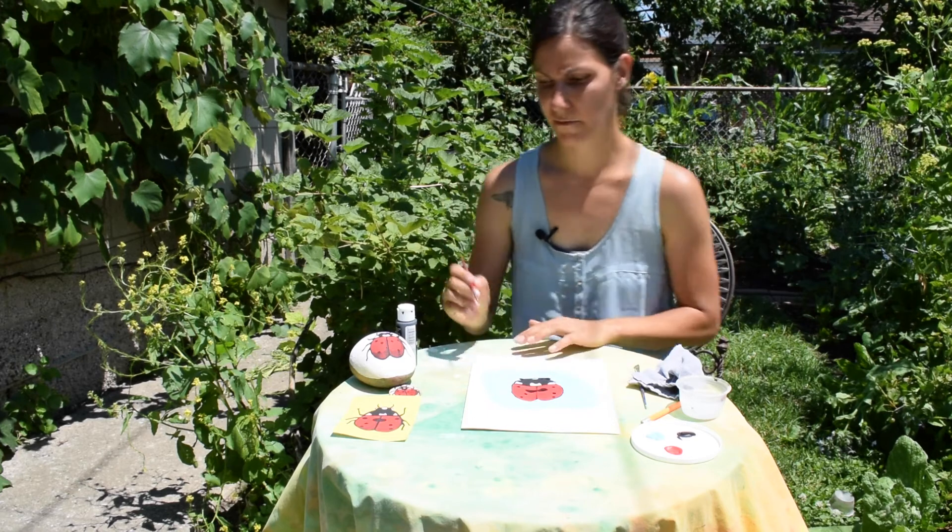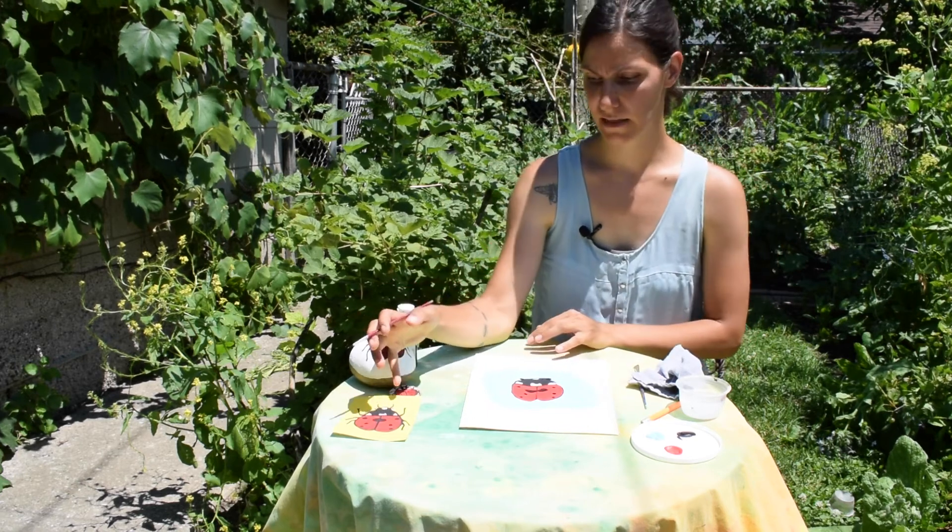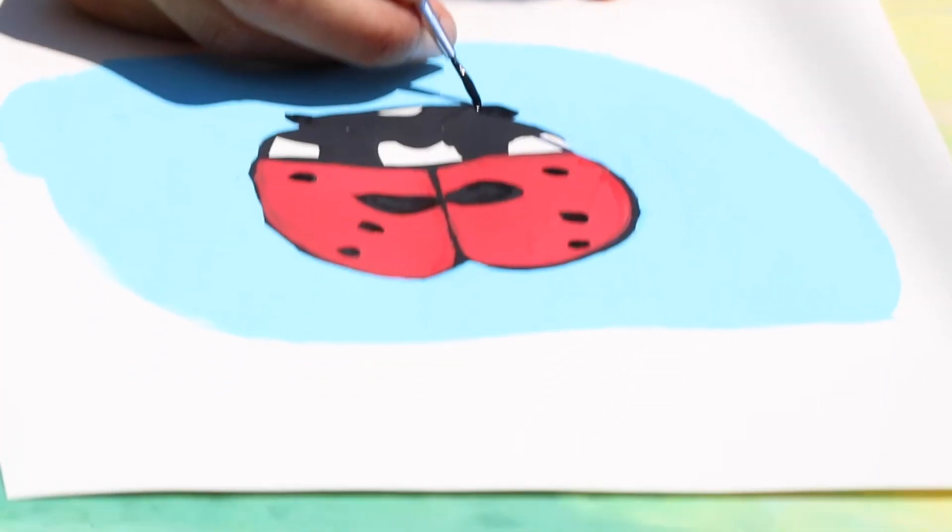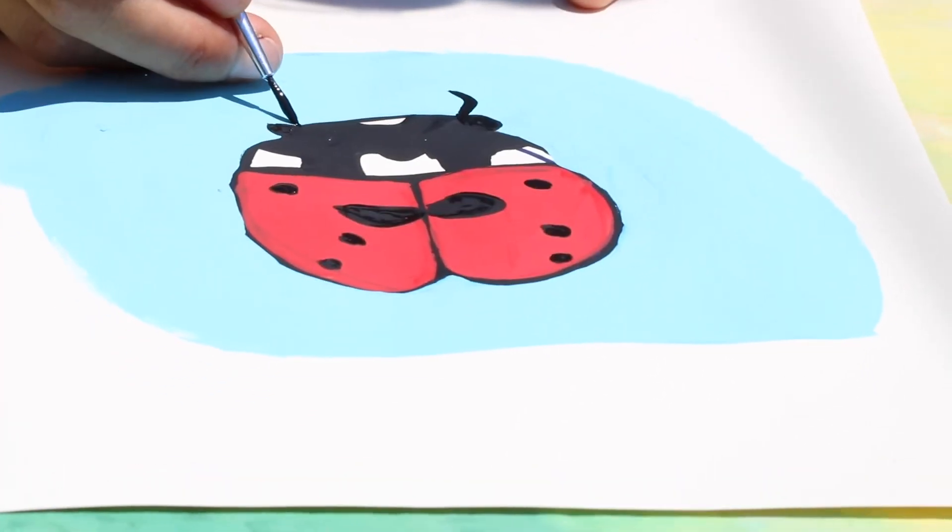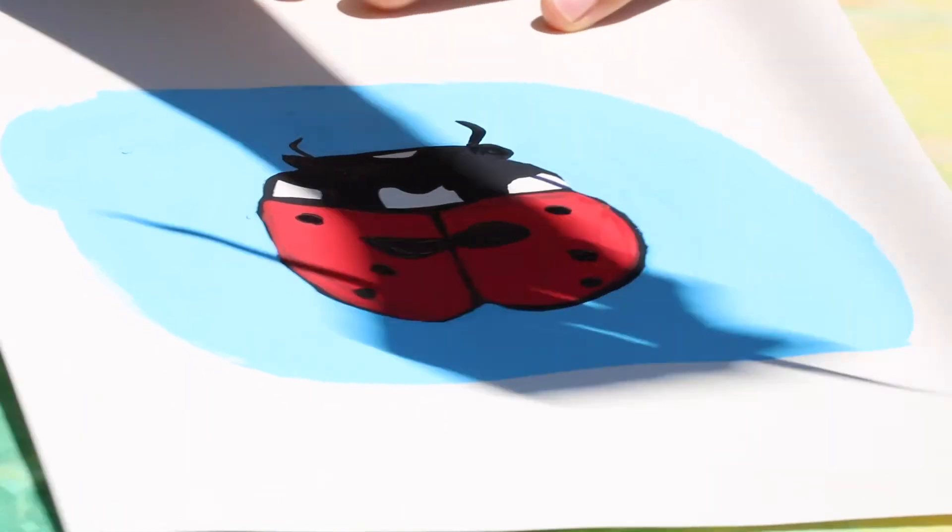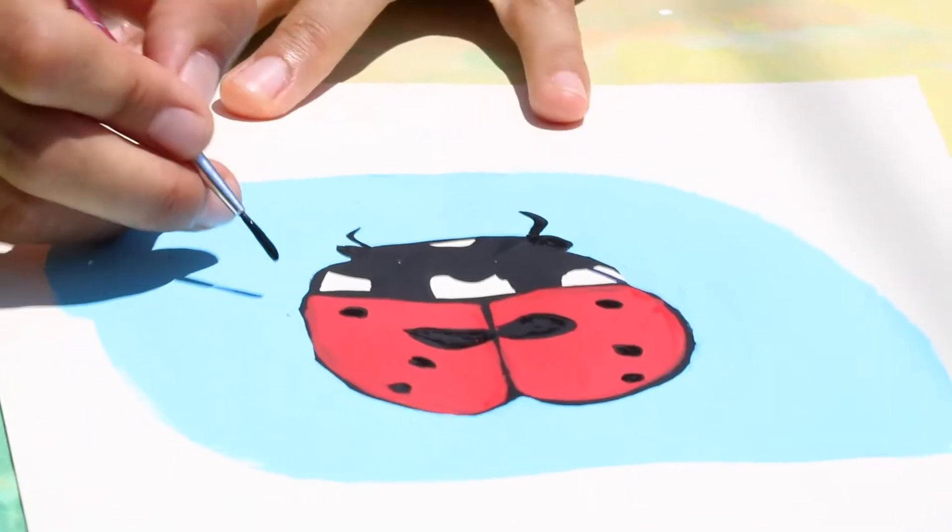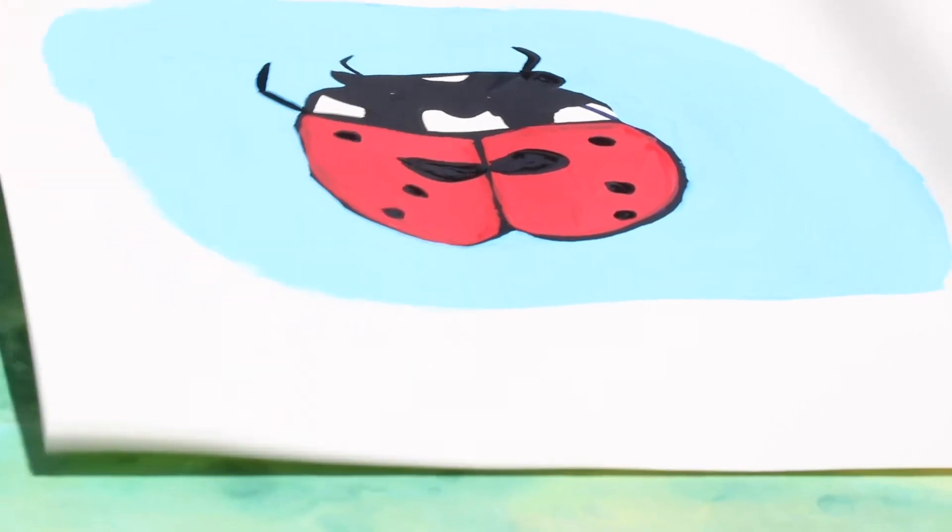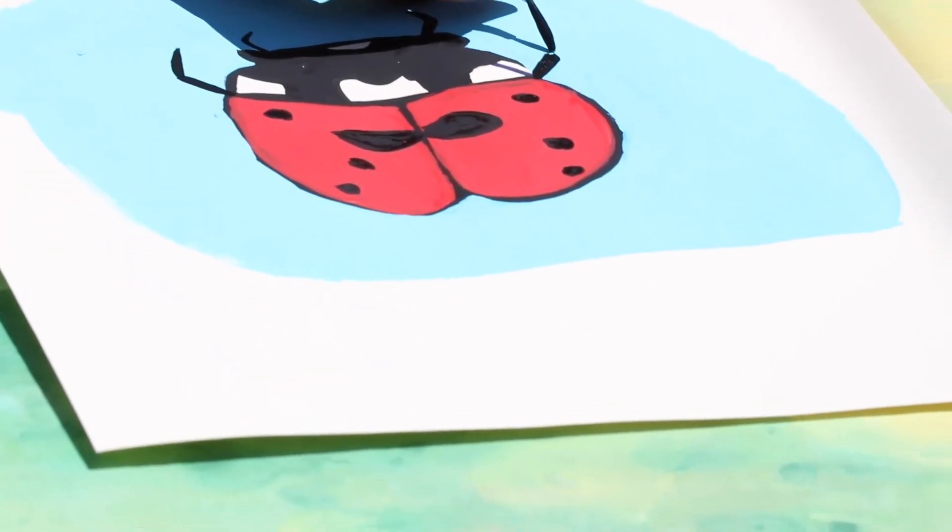And since my background's dry, I'm ready to start painting his antenna and his legs. So for the antenna, make it go out and curve in—they just have short antenna.